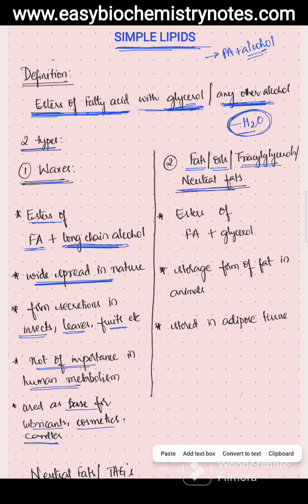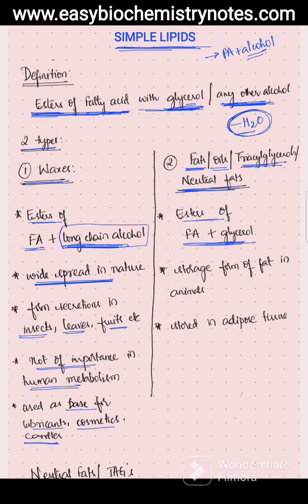The next type of simple lipid is fats and oils, or triacylglycerols, otherwise called neutral fats. These are esters of fatty acid plus glycerol. In waxes the alcohol was a long chain alcohol, whereas in fats and oils or triacylglycerols, as the name itself tells, it involves a fatty acid plus glycerol. This triacylglycerol, or neutral fat, is the storage form of fat in animals, stored in the adipose tissue, and serves as a reservoir for energy during starvation.